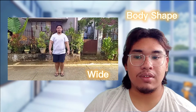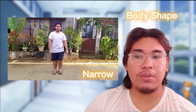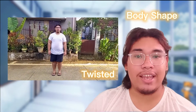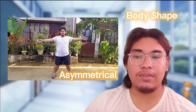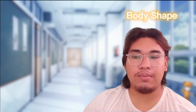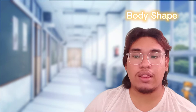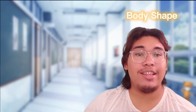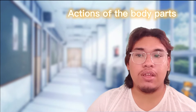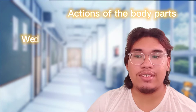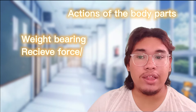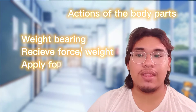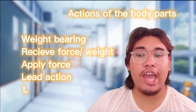Body shape refers to how wide or narrow or twisted the body is, or even symmetrical or asymmetrical — this forms a silhouette or form of the body in space. Next, the actions of the body parts include movement elements such as weight bearing, receiving force or weight, applying force, lead action, and weight transfer.